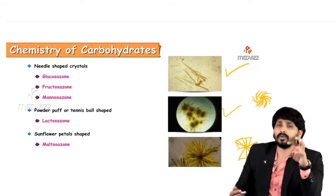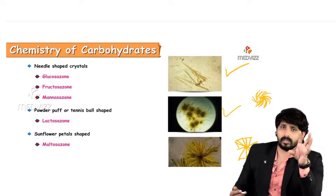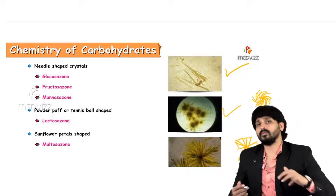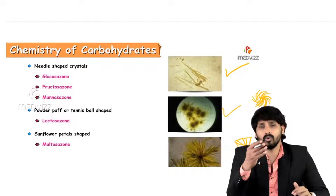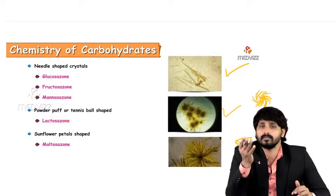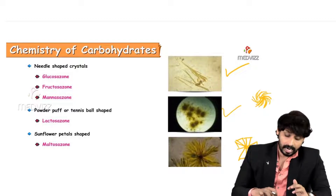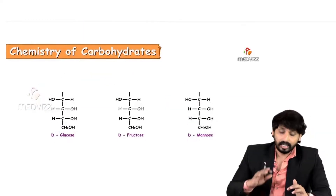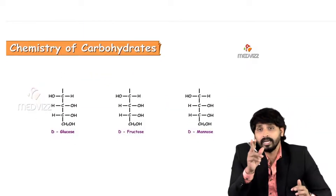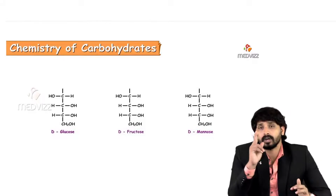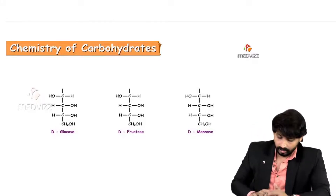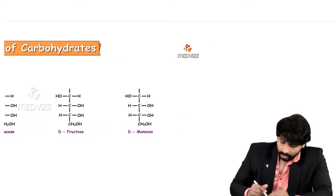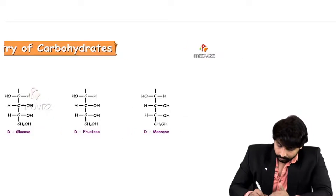Now, why do glucose and fructose both show the same needle-shaped crystals? The difference between glucose and fructose lies in the first two carbons. Since phenylhydrazine reacts with precisely those first two carbons, it masks the differences between the two sugars, leaving the rest of the structure the same — which is why both give identical needle-shaped osazone crystals.